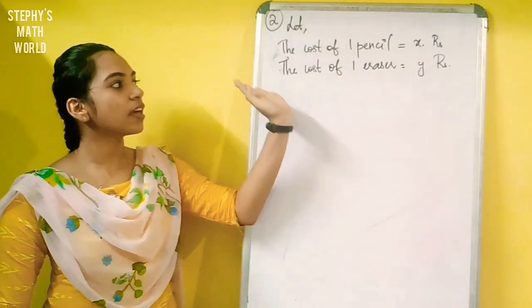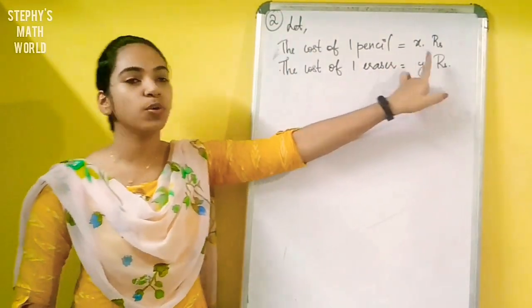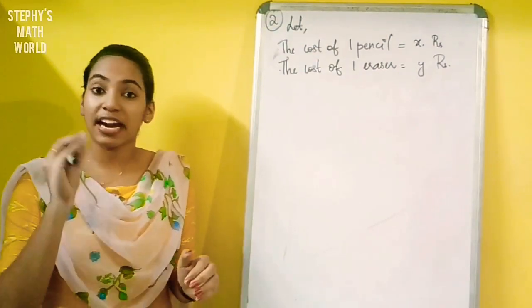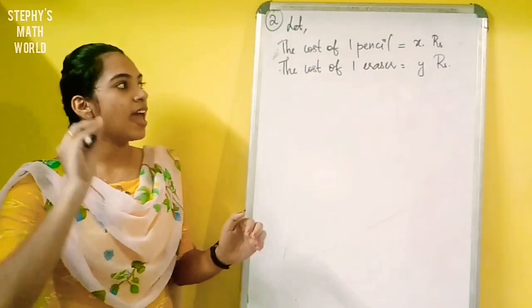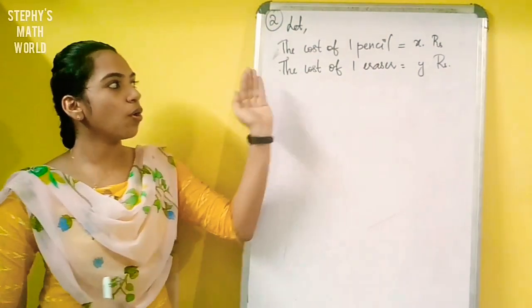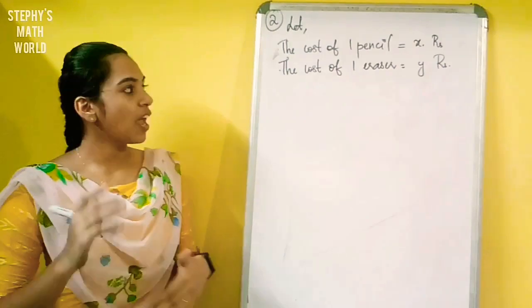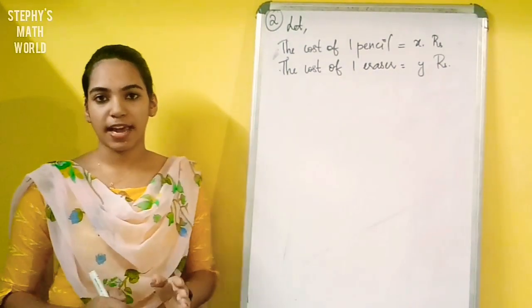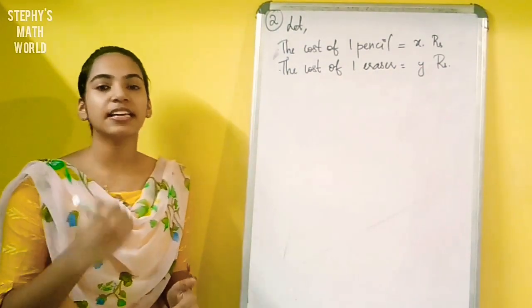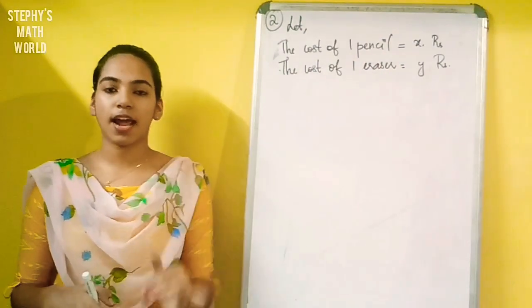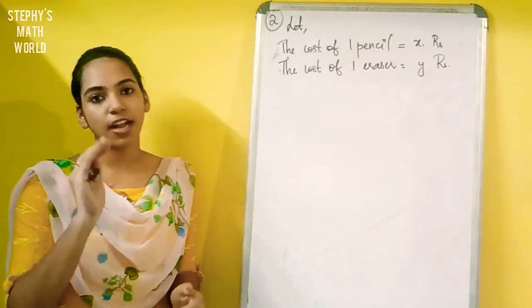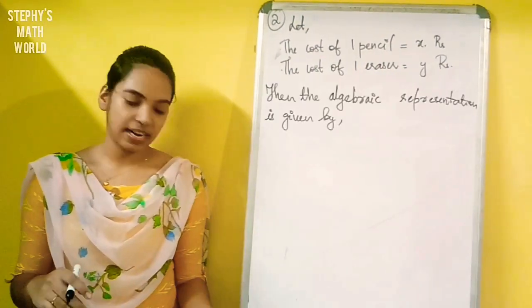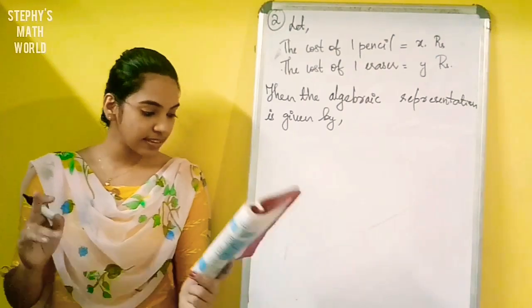Let the cost of one pencil be equal to X. This is the form of an algebraic expression. So the question is to represent this situation algebraically and graphically.